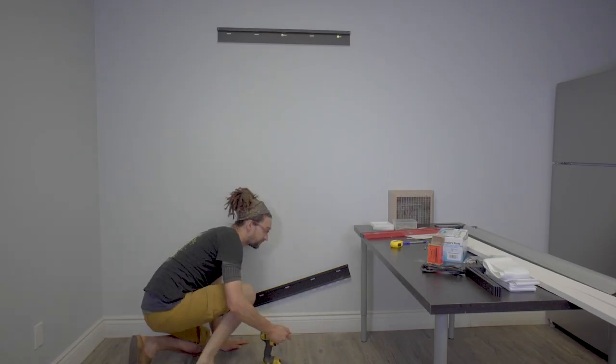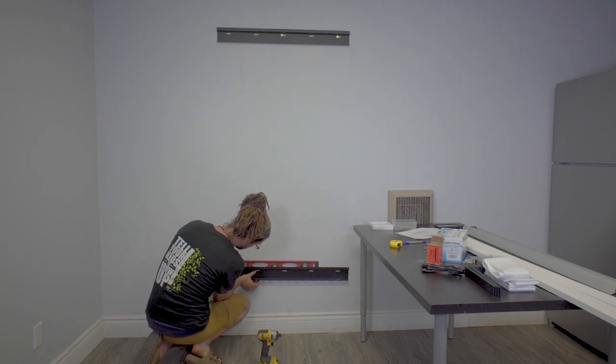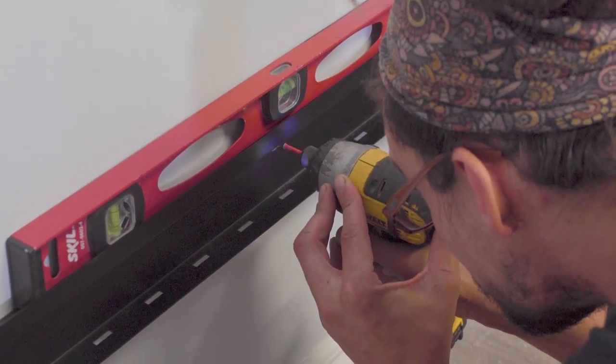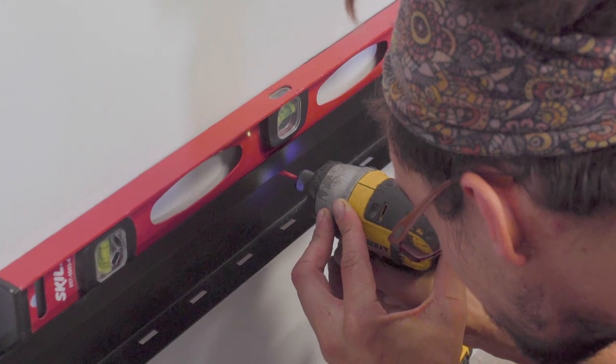Once you've got one bracket fixed securely onto the wall, I measure 62 inches down from where the screws are and attach the second one 62 inches level down below, so that we end up with 62 inches between our upper bulkhead and our lower gutter.